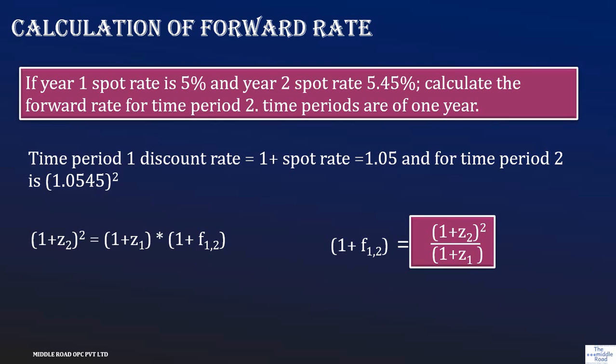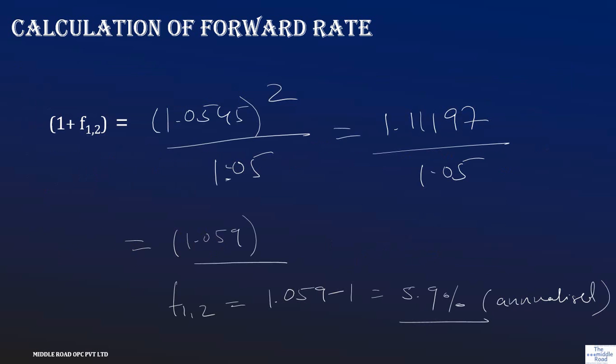Now in this particular moment, I will be putting down the equation. I need to know what is the forward rate between one and two. I know the spot rate Z2. I know what is the spot rate Z1. This is the period of one year. So I analyze, I equate the equation. Ultimately, I will be getting if I solve the equation, this is what I would be getting as 5.9%.